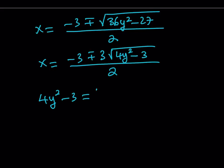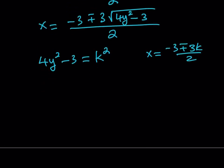To keep a long story short, the expression inside the radical needs to be a perfect square. Let's call that k². So if that's the case, now notice what happens if 4y² minus 3 is equal to k², then you would get something like x equals negative 3 plus minus 3k divided by 2. This can be an integer. At least it has a chance.